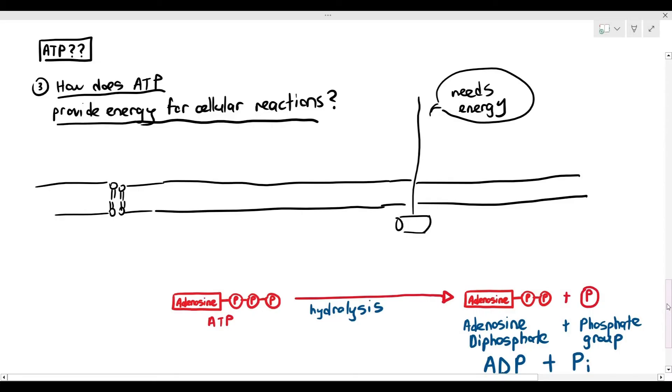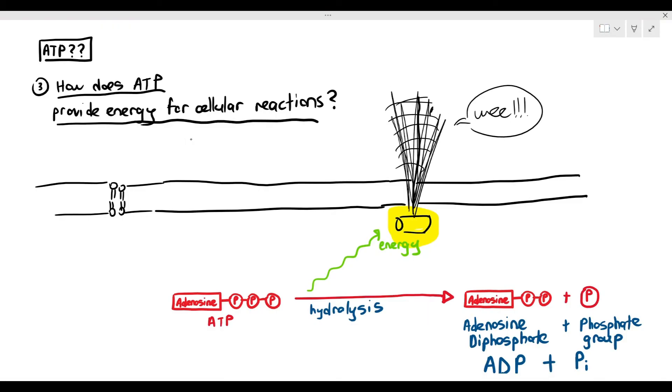When you're writing it in the exam, you have to put ADP plus Pi, capital I or a subscript i is okay. Because if you just put ADP plus P, P is wrong, because that P represents the chemical element phosphorus. So in the exam, you have to put ADP plus Pi, just to tell the examiner that that is an inorganic phosphate, not phosphorus. It's a little bit, they can be a little bit nitpicky, so just be careful with that.